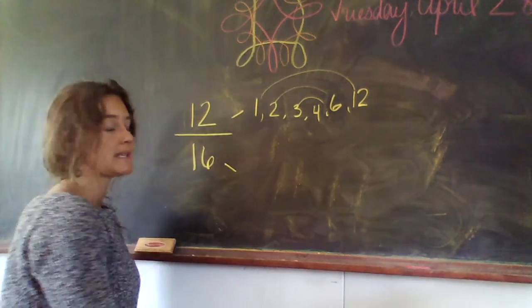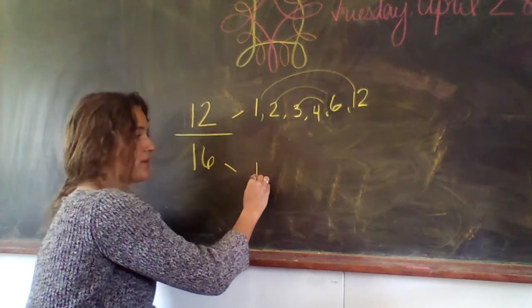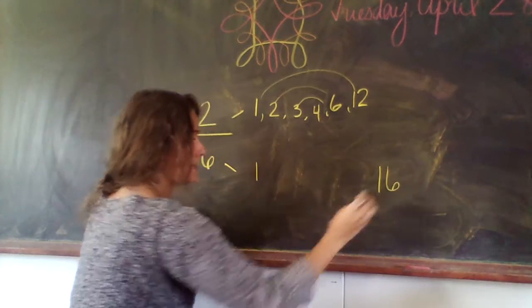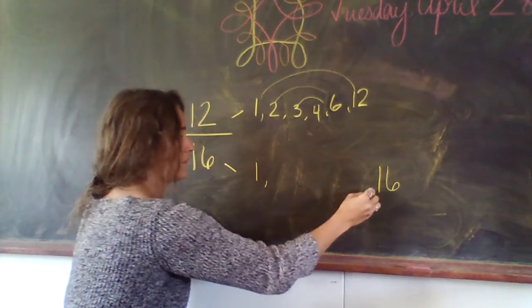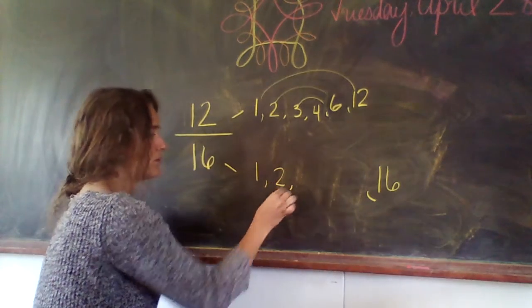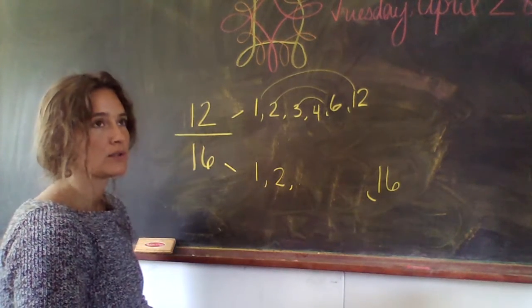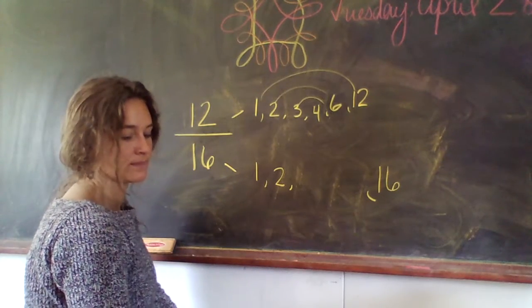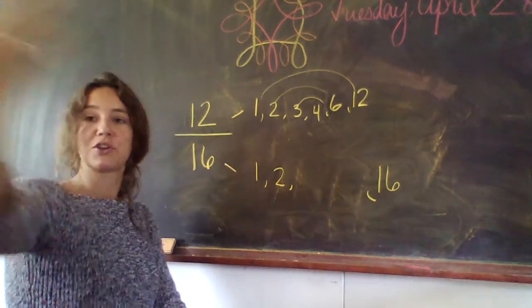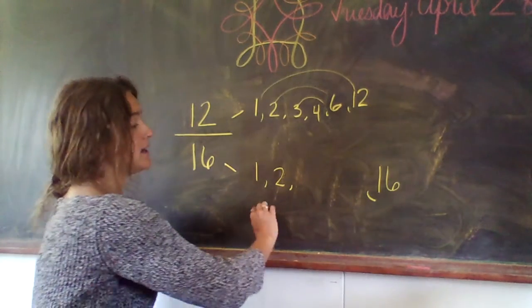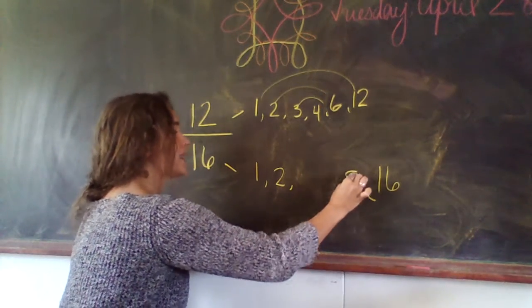Now we go on to 16. I know the first two numbers are 1 and 16. It's even. 2. Who's 2's partner? 2 times what is 16? Sorry, I might be speaking a little fast because there's no children in front of me, but I hope I'm going at an okay pace.